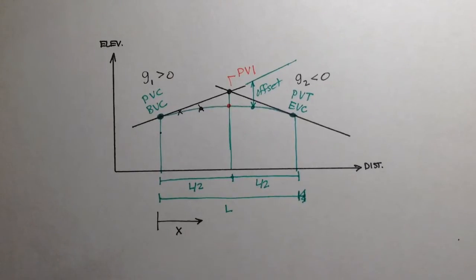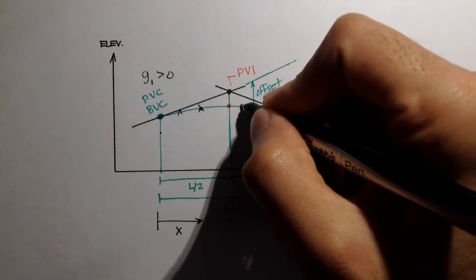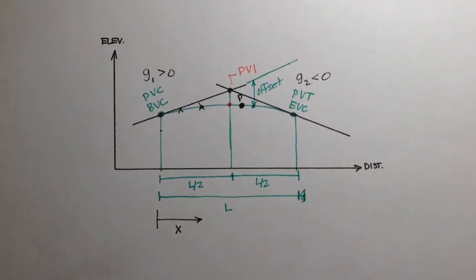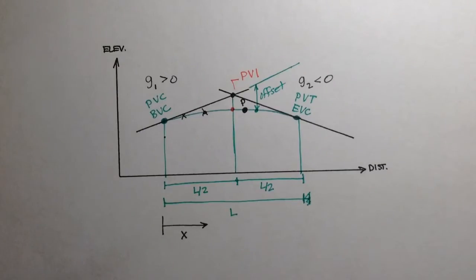All right, so let's say we wanted to find the location of a certain point on this vertical curve. Let's say that point was right here. I'm going to call that point P. We're interested in that point, and we want to find what the elevation of that point is. Since a vertical curve is based off the parabolic function, we can actually use that function to find the elevation.